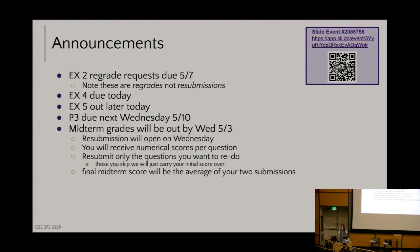The way the midterm resubmission works: you did the midterm timed on paper. This Wednesday we will open a digital resubmission via Gradescope, and you can select only which questions you want to resubmit. You'll have a week to resubmit — it's the exact same questions with no changes. We'll take your two scores and average them together. For example, if you got 50% the first time and 100% the second time, you'd end up with 75% overall. You can also choose not to resubmit and keep your original score.